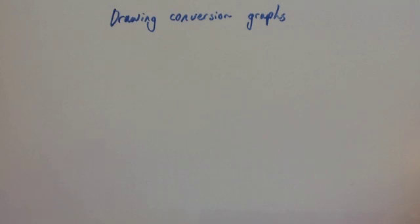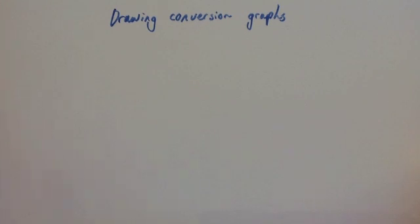In this video we're going to look at how to draw conversion graphs. There are typically two different types of questions they could give you: they could either give you a table and ask you to plot the points and then draw the conversion graph, or they could just give you a conversion rate and get you to plot it yourself from the conversion rate. So let's have a look at each of those.